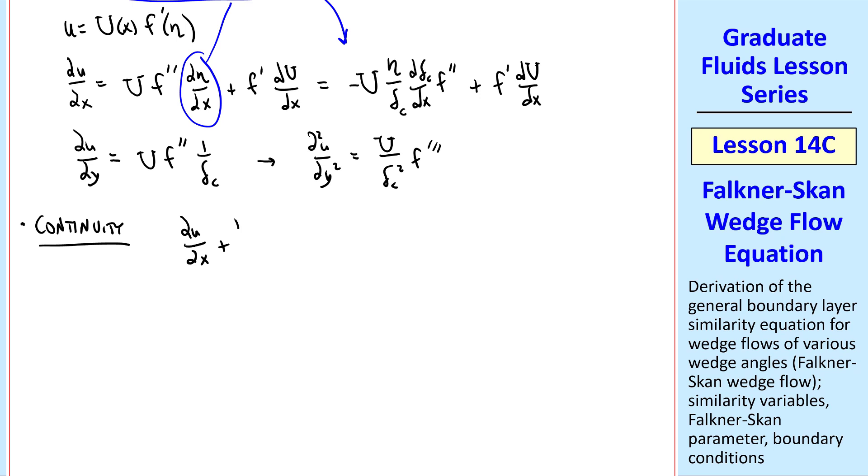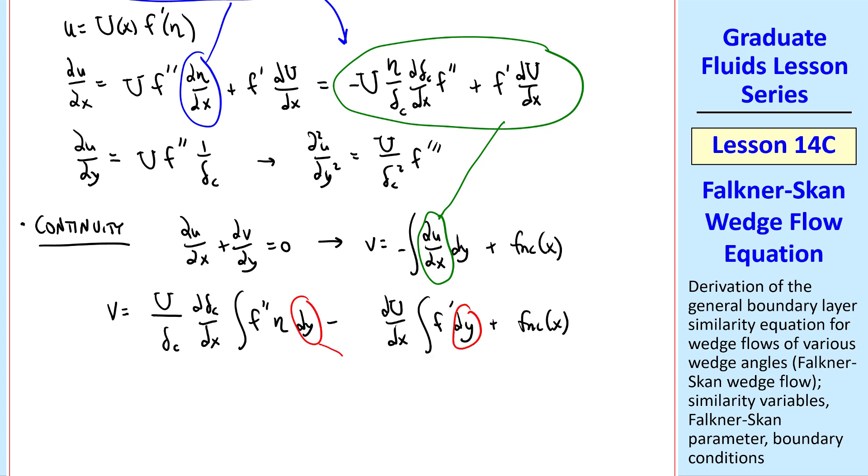Let's examine continuity first. Namely, we'll solve for v, and we'll plug in this expression for del u del x. And we put the functions of x and constants outside the integral. But dy is delta c d eta, since eta is just y over delta c.